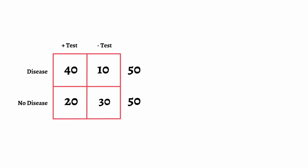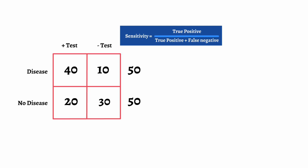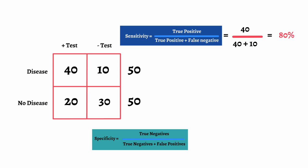Now let's start our calculations. Sensitivity is true positives divided by the sum of true positives plus false negatives. True positives are 40, divided by 40 plus false negatives which is 10. 40 plus 10 is 50, so 40 divided by 50 is 0.8, or 80%. Specificity is true negatives divided by the sum of true negatives plus false positives. So we have 30 divided by 30 plus 20. This is 30 divided by 50, which is 0.6, or 60%. So this test is 80% sensitive and 60% specific.